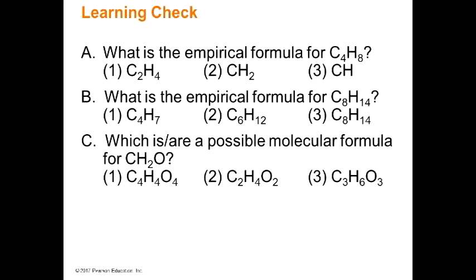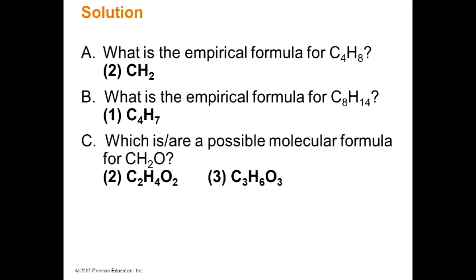For C8H14, the empirical formula reduces to C4H7. A molecular formula is the empirical formula or any whole-number multiple thereof — it may also be identical to the empirical formula. In these problems, two times the empirical gives one possible molecular formula and three times gives another. That's how you do these.